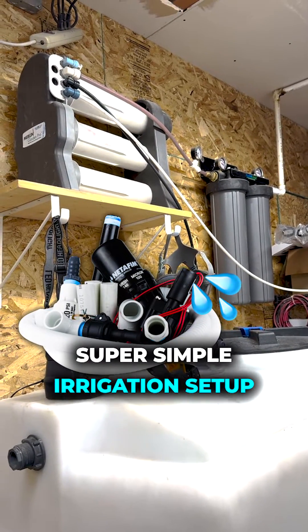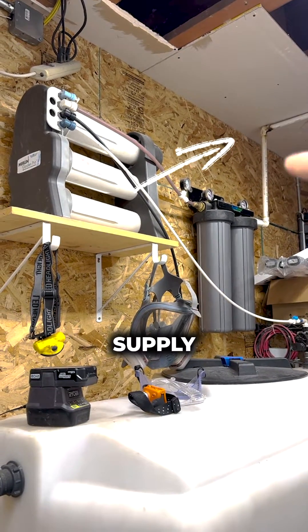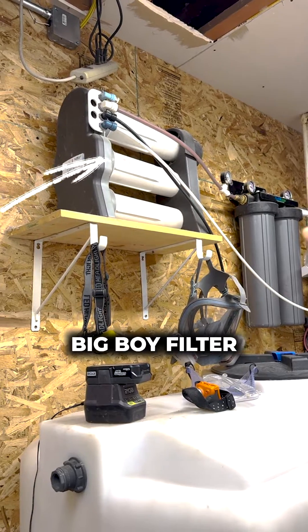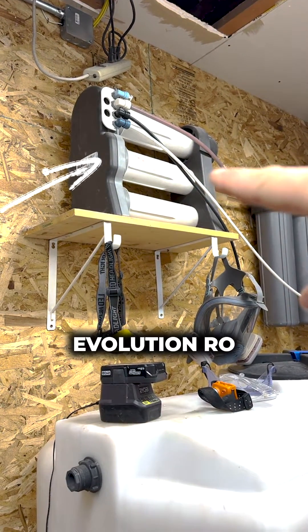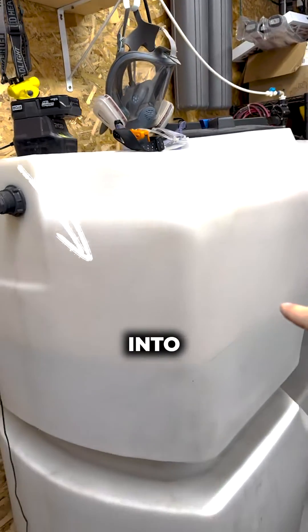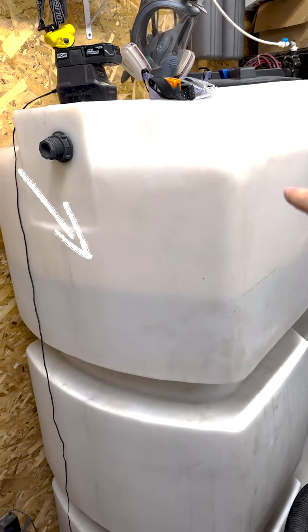This super simple setup should help a lot of people out. Fresh water supply into Big Boy Filter. Big Boy Filter into Evolution RO. Evolution RO into 400 gallon storage tank with a float.